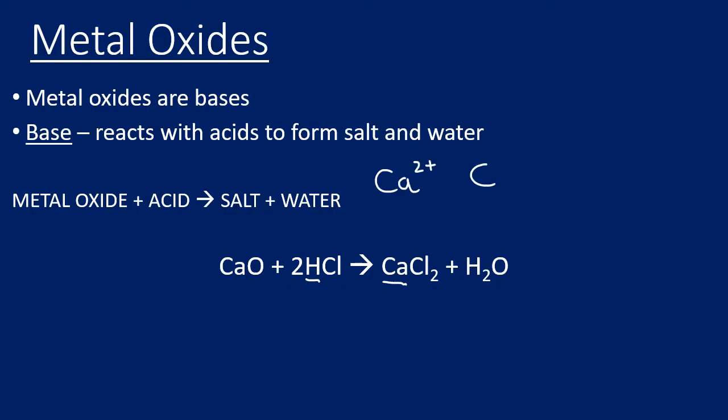That's a salt because the hydrogen ion in the acid has been replaced with a metal ion. Calcium is in group two, so it's a 2+ ion. We've seen that chloride is a minus one ion, which means we require two chlorides, so the formula for calcium chloride is CaCl2. Water is also formed. The two here is required to balance the equation.